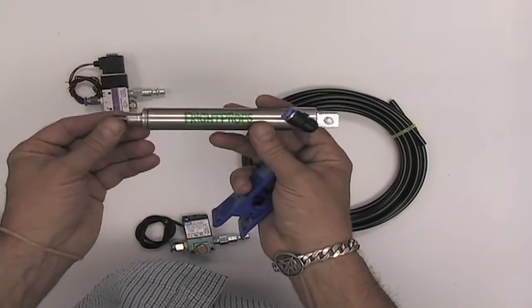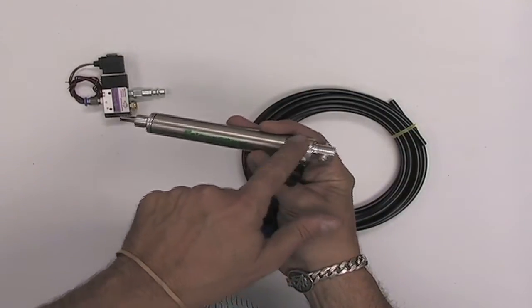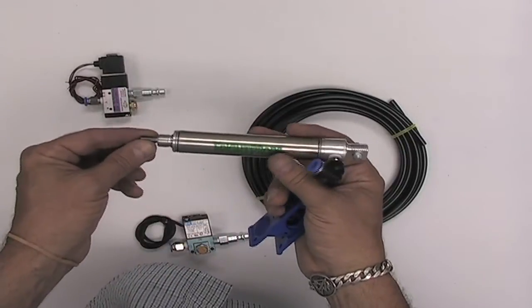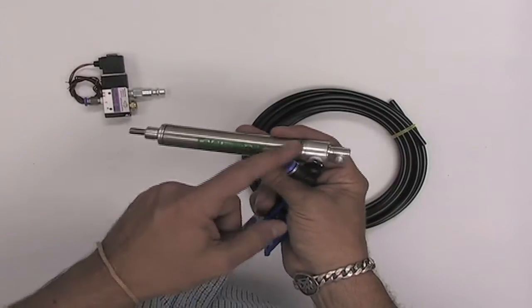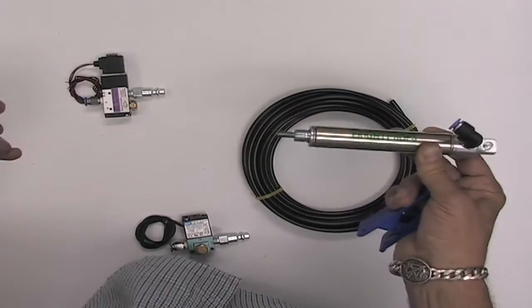Here we have a single-acting cylinder. When air comes into the back, it pushes it out and a spring is responsible for returning it. So air would come in here, push it out, and when air is let off the spring pulls it back.